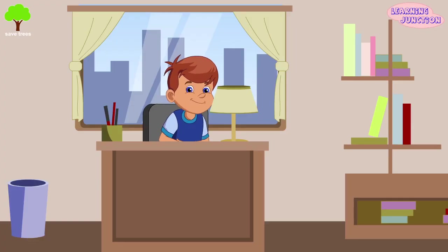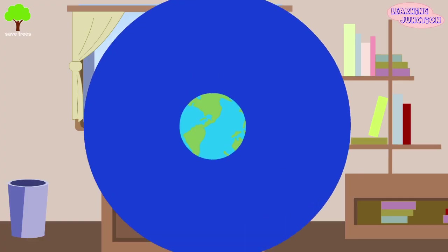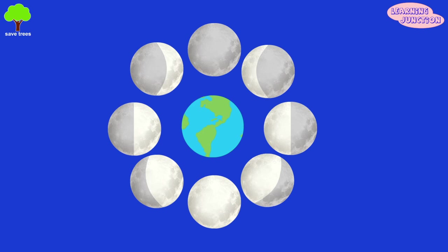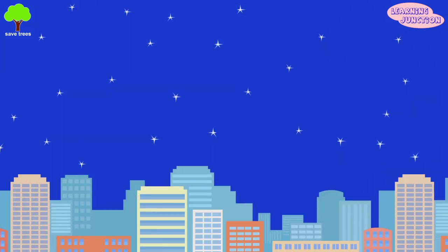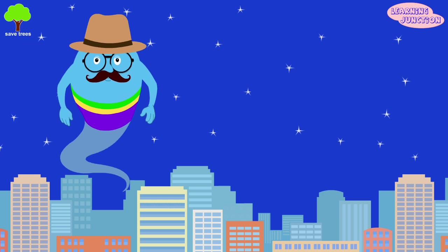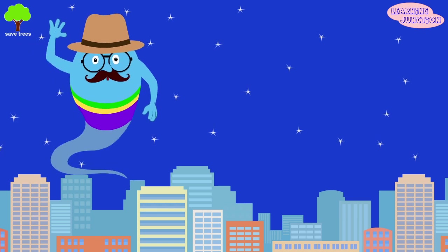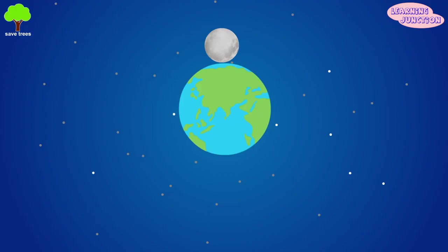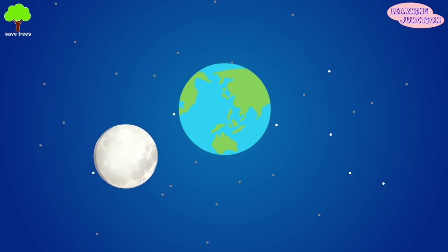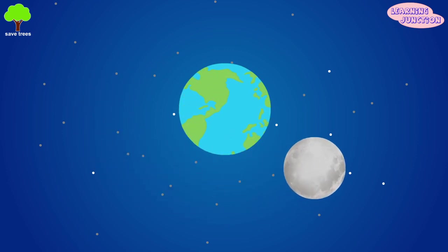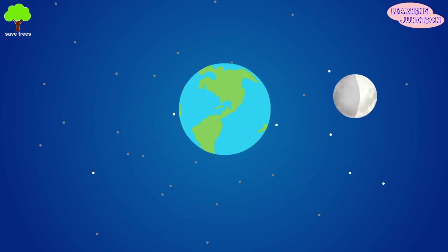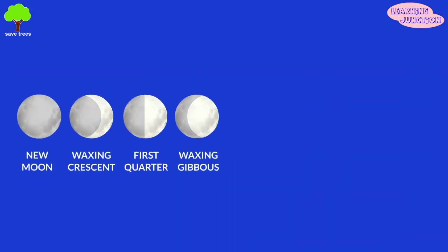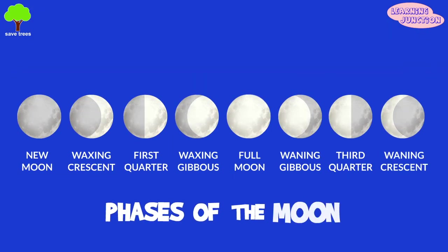Did you notice? We see different shapes of the moon from time to time. On some days, we don't see the moon in the sky at all. Does it play hide and seek with us? No, that's not true — there is a reason behind this. The revolution of the moon around our Earth makes the moon appear as if it is changing shapes in the sky. These different forms or shapes of the moon are called phases of the moon.